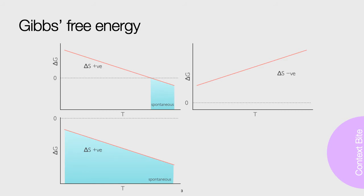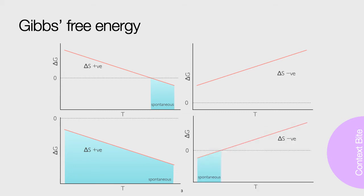For exothermic reactions, where the enthalpy change is negative, we can again have positive entropy changes, and in this case, these reactions are spontaneous at all temperatures. Finally, we have exothermic reactions with negative entropy changes, which are spontaneous only at low temperatures.